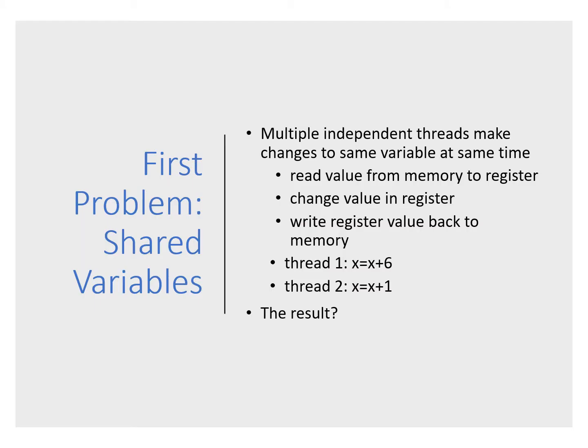The first problem is shared variables and shared state. When multiple independent threads make changes to the same variable or object at the same time, at the machine level you read a value from memory into a register on the CPU, then change that value in the register and write the modified value back to memory. At the machine level, if you are writing assembly language, these are all independent instructions. A read, change, write is not an atomic operation.